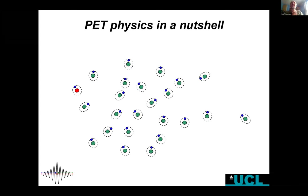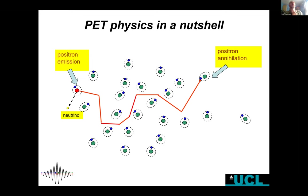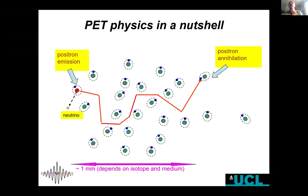Here is a not-to-scale drawing of atoms in the patient. The red one is a radioactive atom that at some point will emit a positron and a neutrino. We can't detect the neutrino, and we can't really detect the positron either — although we do positron emission tomography. This is because the positron travels around for about one millimeter and then annihilates with an electron, so the positron never escapes the body. However, when that annihilation happens, two gamma photons are sent in roughly opposite directions, and it is those gamma photons that we detect.